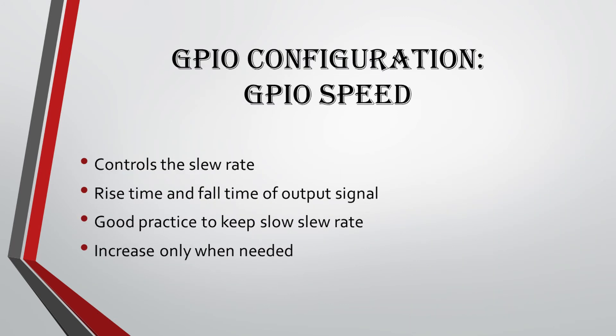Another parameter is GPIO speed, which controls the slew rate — which determines the rise time and fall time of the output signal. It is good practice to keep the slew rate slow and increase it only when needed.